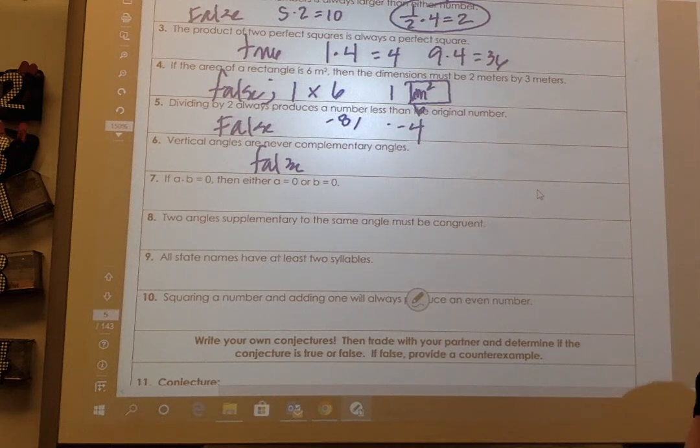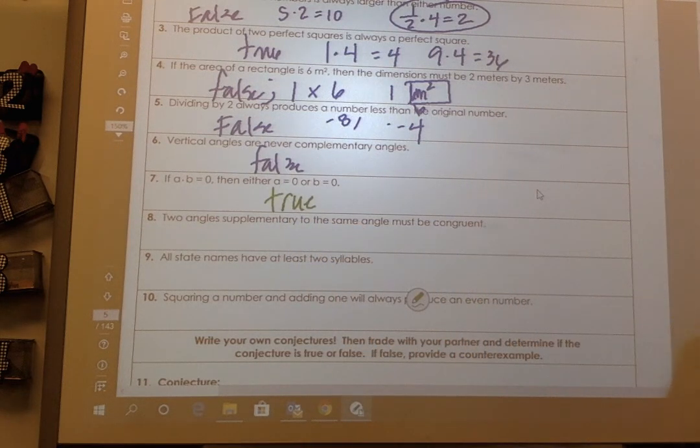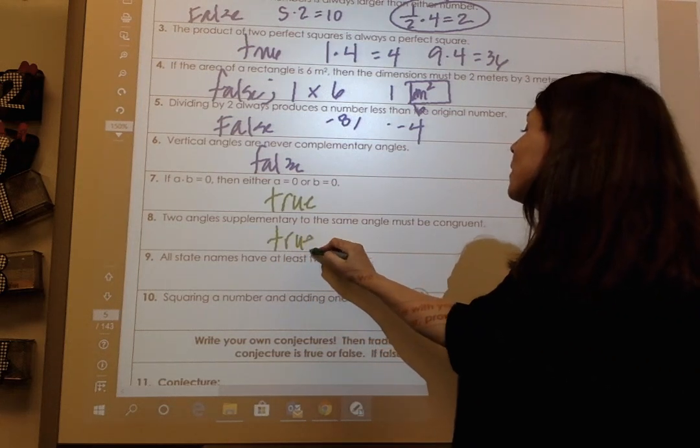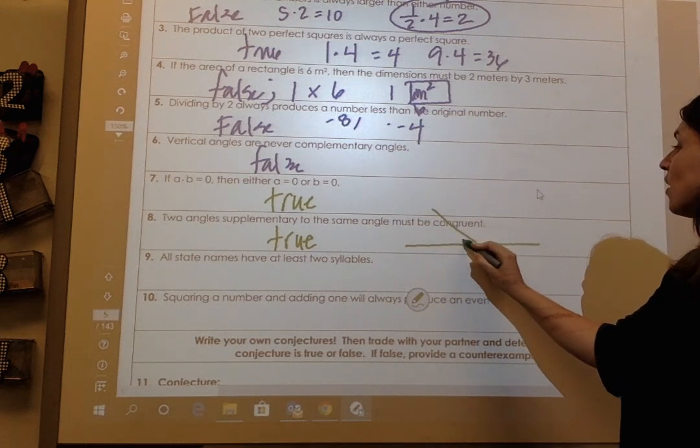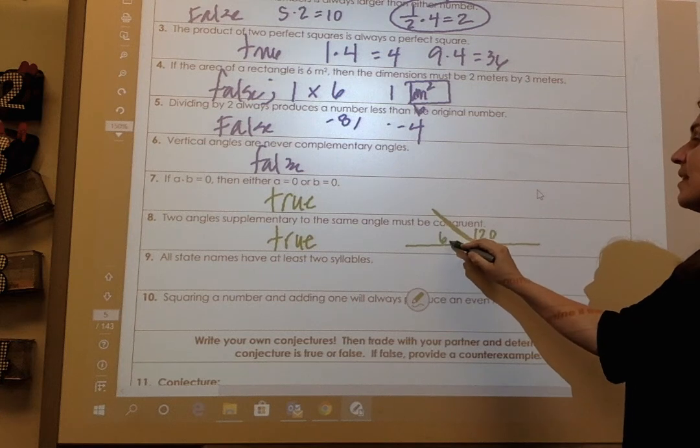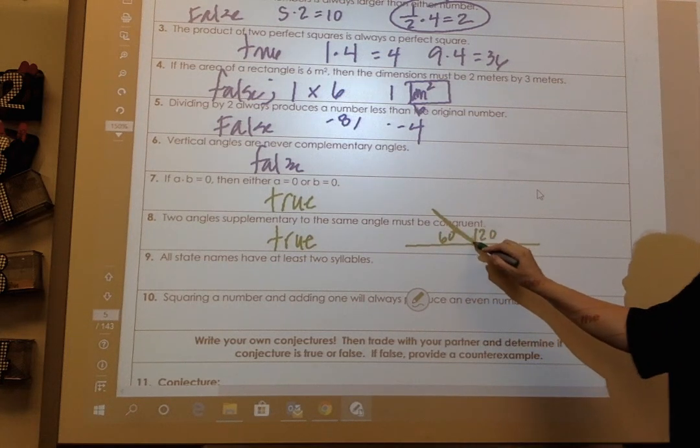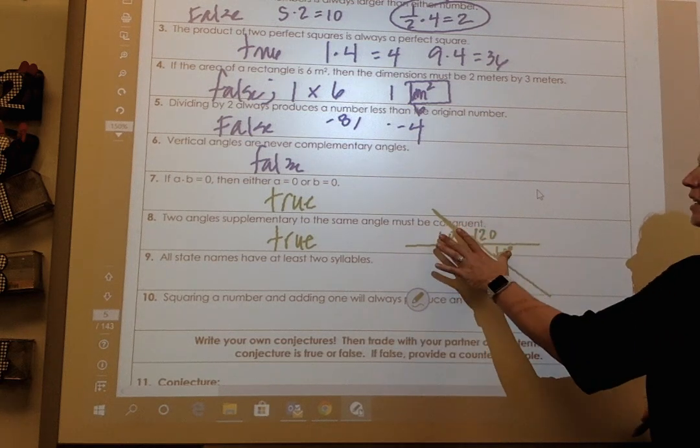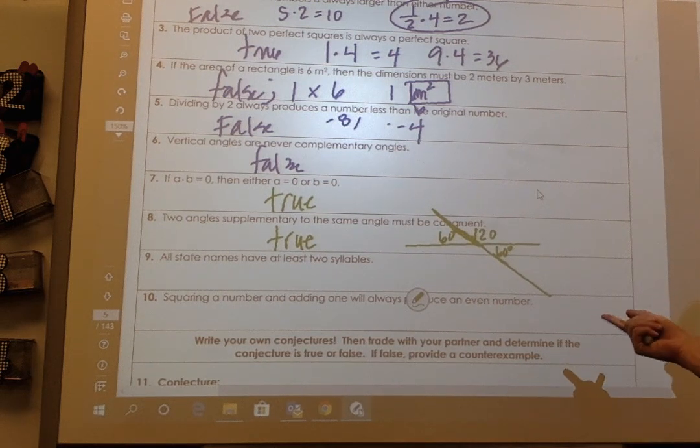Number seven is true. The product property makes it true. Number eight is true. Two angles supplementary to the same angle must be congruent. So if this is 120 and this is 60, two angles supplementary to the same angle over here, if 120 has to be supplementary to 60 here, so no matter what, that's going to be true.